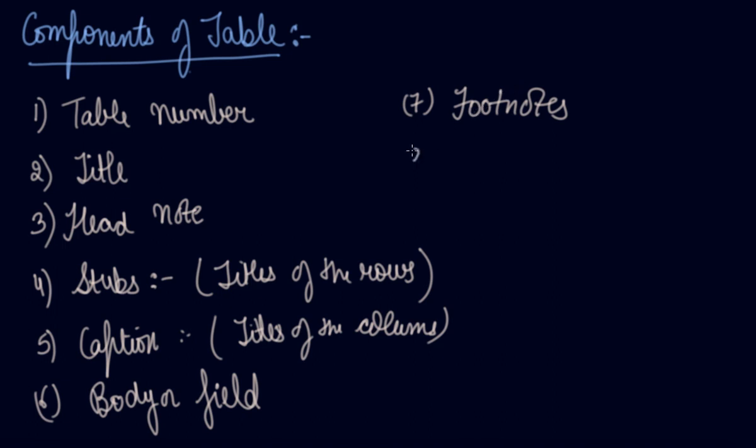Eighth is your source. When you take the table from some secondary source then you have to mention the source of the table from where you have taken it. That is your publication, author name, page number, etc. So you need to write the source in that part.